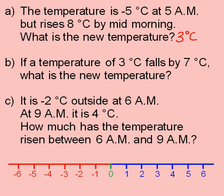I now want to start with a temperature of 3 degrees, so I show this on the number line here. The temperature falls by 7 degrees, so I want to move 7 degrees along the number line in this direction.